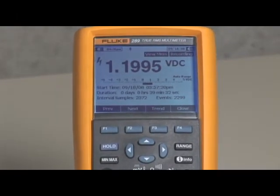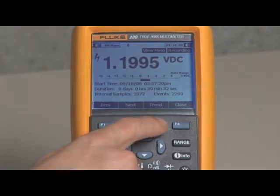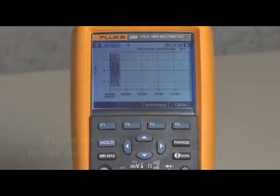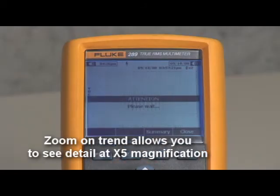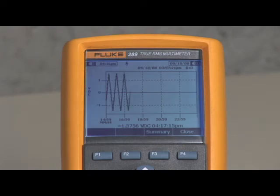This brings up the last recorded session in that category. With the 289 or 287, you can be in two places at once, saving yourself time and money as you detect those intermittent issues before they become big problems.